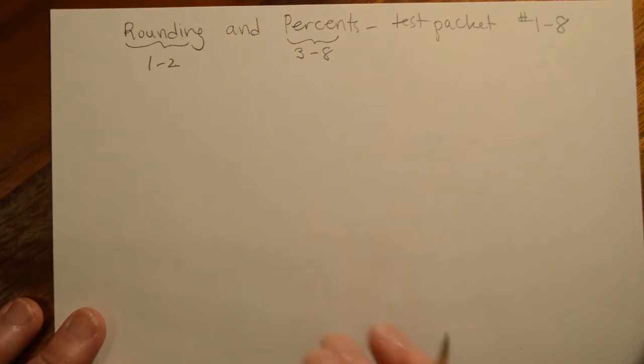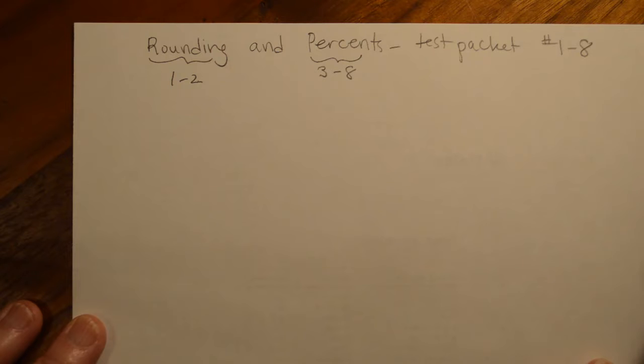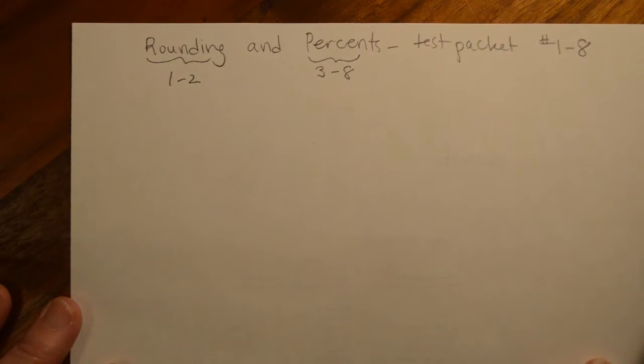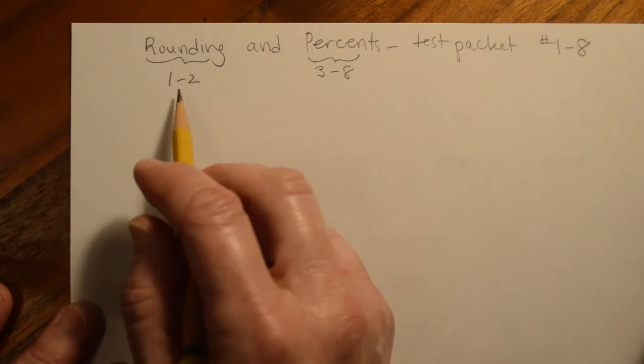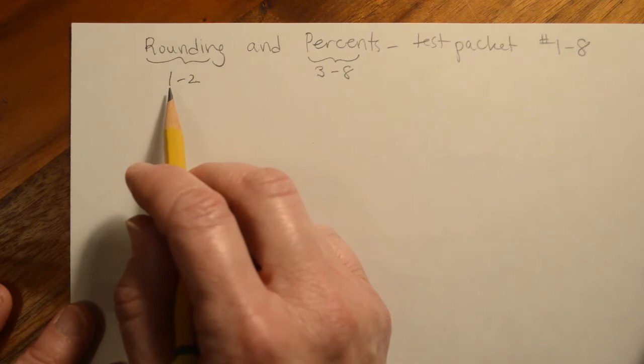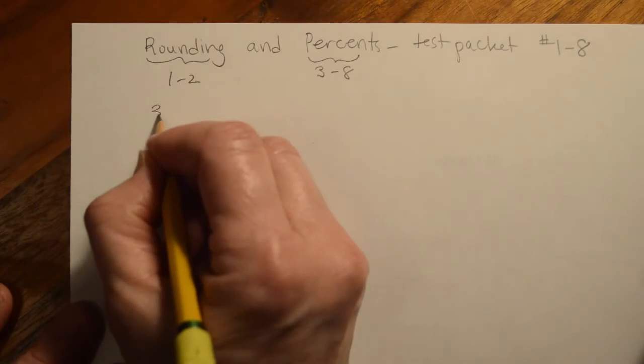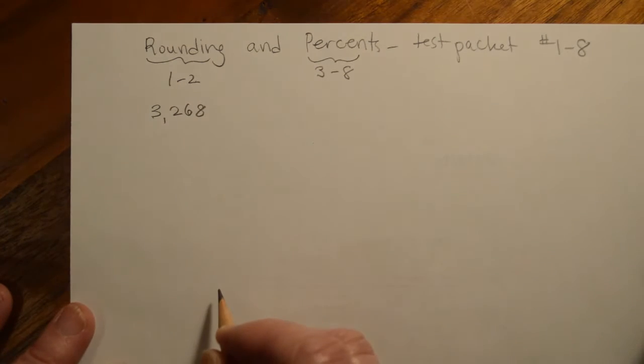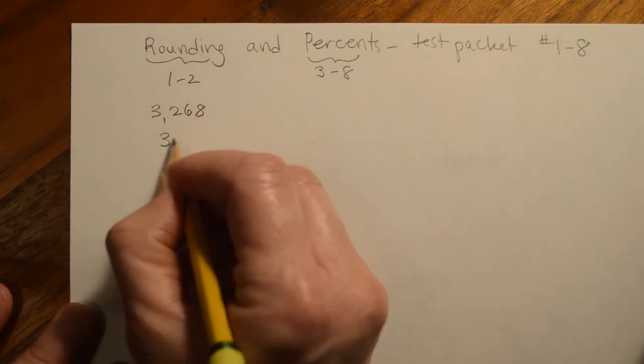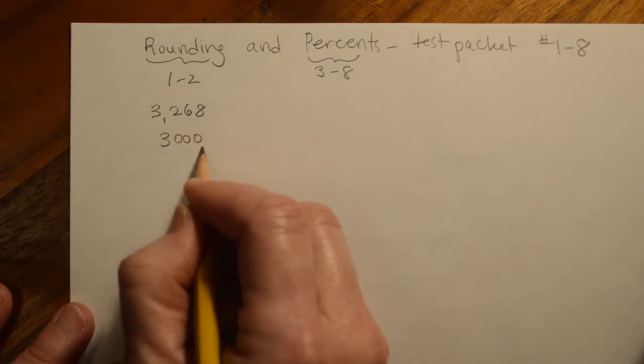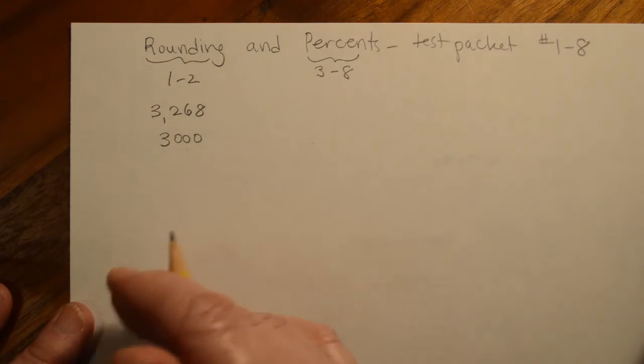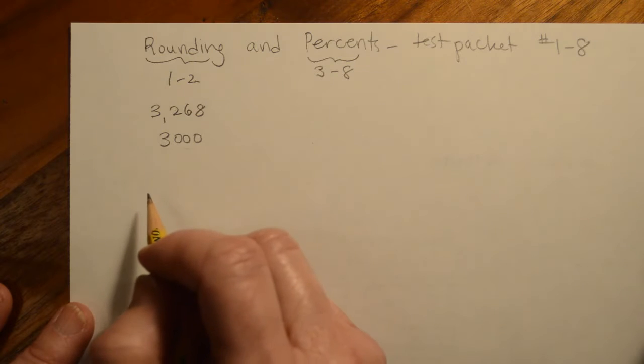So when we say rounding, what we're trying to do is get close to an answer or a number, but not necessarily exact. And you do that all the time without realizing it. If you have a collection, let's say of baseball cards, you don't need to tell somebody the exact number of baseball cards that you have, you would give them an estimate of that and you would probably round it. So you might have, let's say 3,268 baseball cards, but instead you might say, oh, I have about 3,000 cards. They don't need to know the exact amount. They just want to know, do you have three baseball cards, 300 baseball cards, 3,000 baseball cards? So you're just trying to give them something that's close to that.